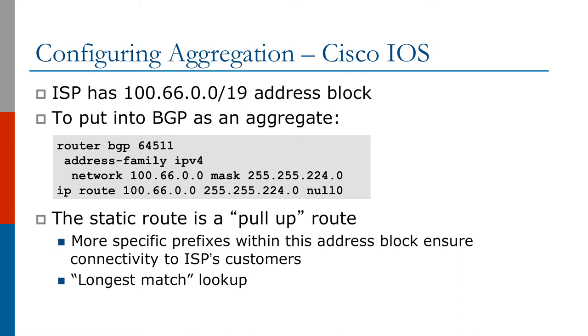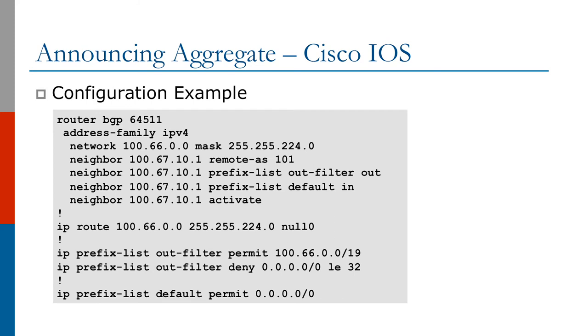Connectivity to ISP's customers can be achieved by using more specific prefixes. Remember that the longest match is always preferred. To announce this aggregate, use a filter on the eBGP peer. A configuration example of how to properly announce an aggregate using filters on the eBGP peers is shown on the screen.